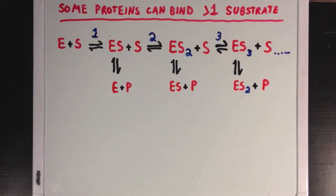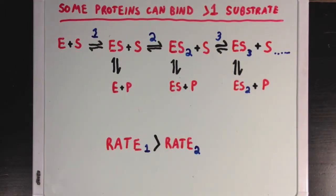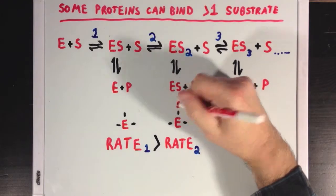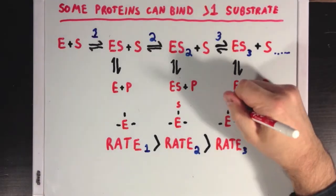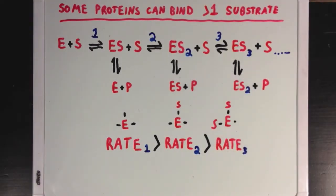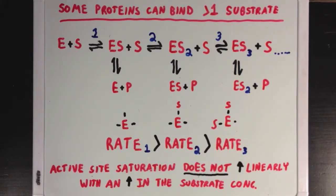You would expect the rate of reaction 1 to be faster than the rate of reaction 2. If we're looking at the example of an enzyme with three substrate binding sites, there are three empty sites available for substrate to bind through reaction 1, and only two available for reaction 2, so you would expect rate 1 to be faster. Similarly, rate 2 would be faster than rate 3 for the same reason, and the idea is that active site saturation does not increase with substrate concentration linearly.